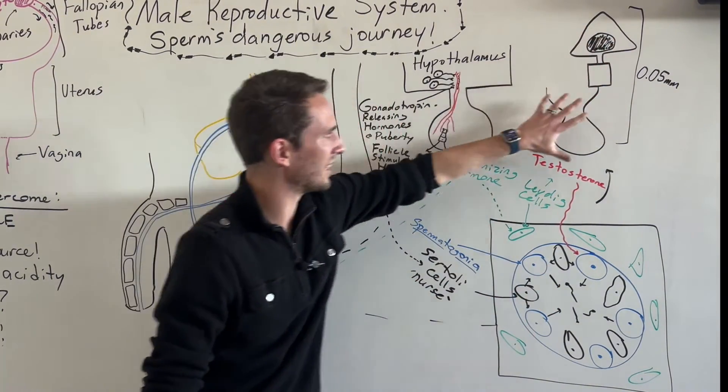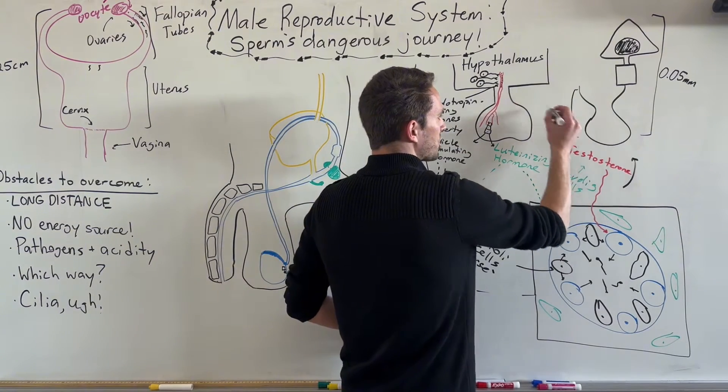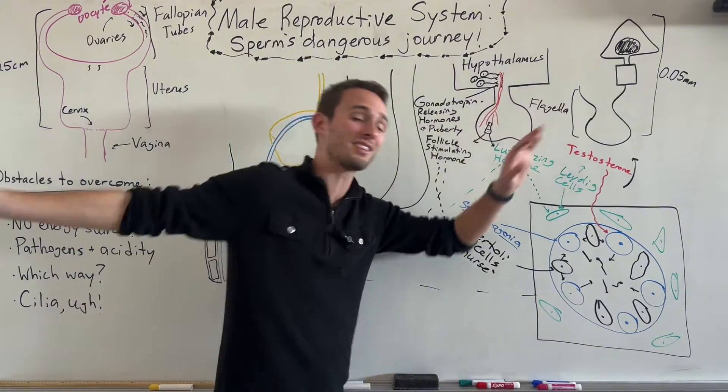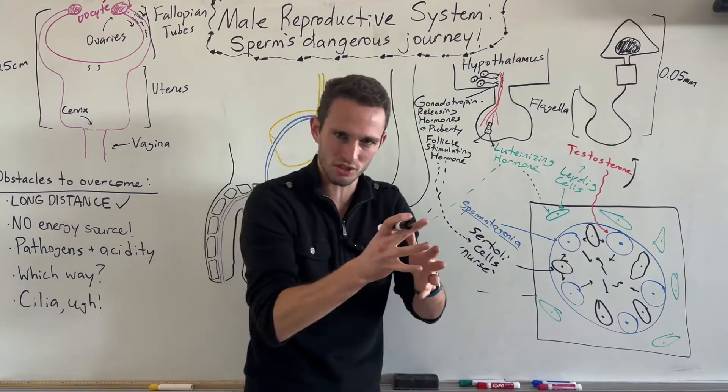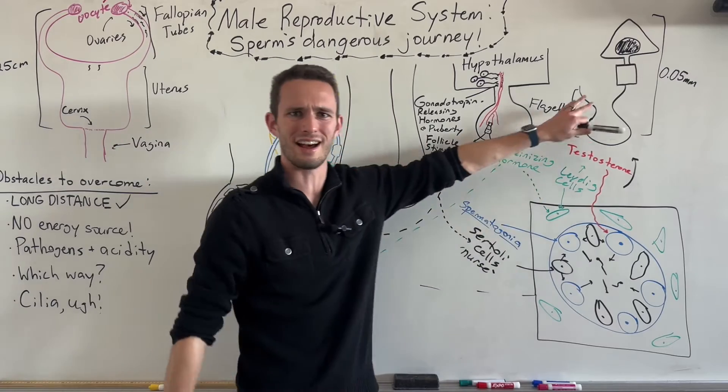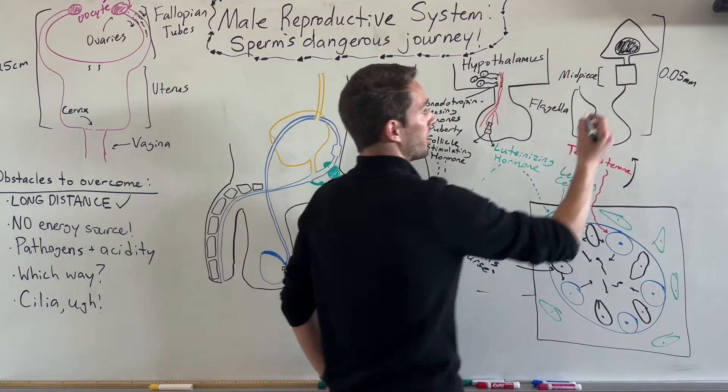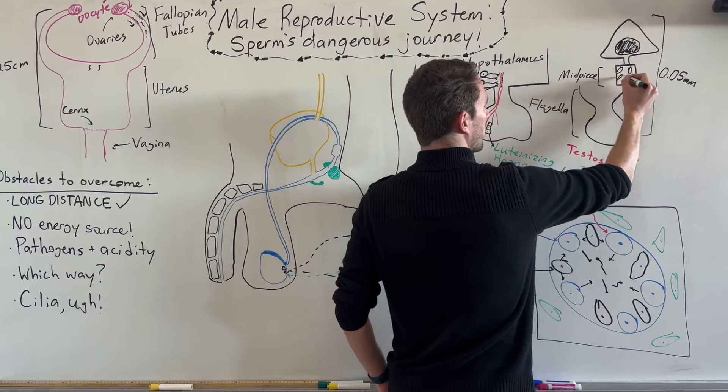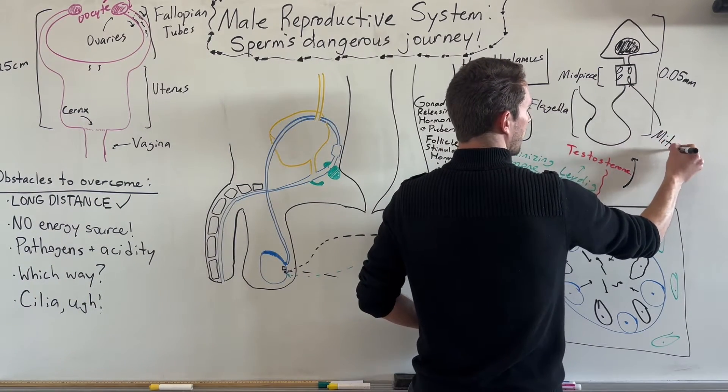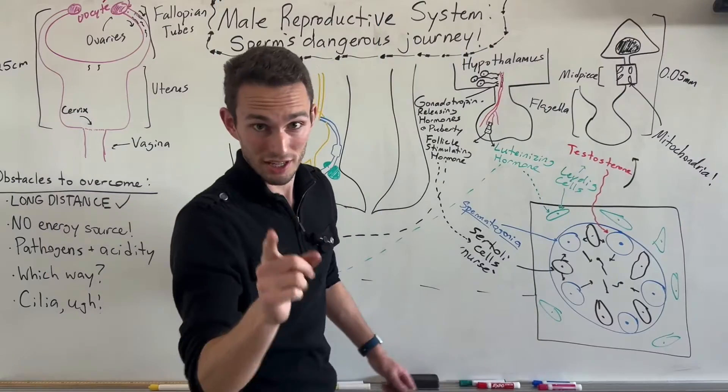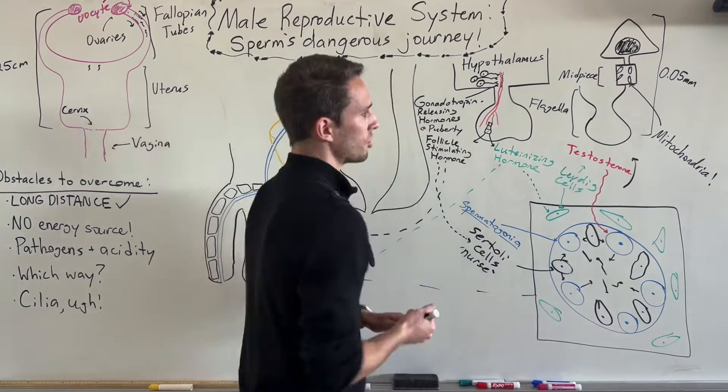The process by which we go from spermatogonia to actual sperm cells is called the process of meiosis. Once we produce our sperm, they will look like this. Why would we want them to look like this rather than like this based on the obstacles? You can see that on the base we've got this long projection called a flagella, and the flagella is like a flag, it's going to whip like crazy so that the sperm can actually move, and that's going to help with this long distance. Now we're going to be able to swim for a long period of time, but that takes a lot of energy.